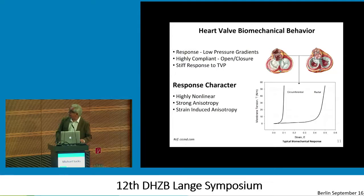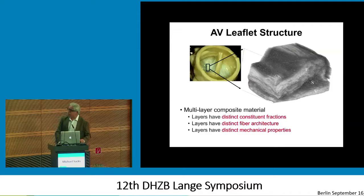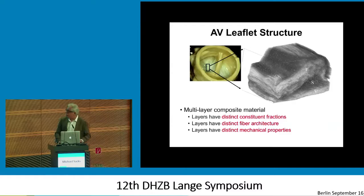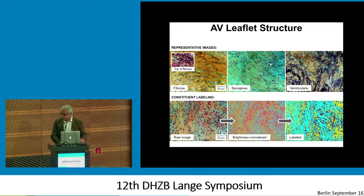Let's get down into the microstructure. One of the first things you notice is why there are multiple layers — and this hasn't really been solved until just recently. They all have different constituent fractions, different architectures, and distinct mechanical behaviors. And the question is: why is that?